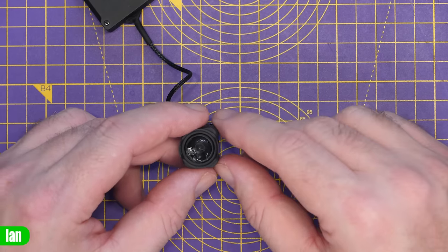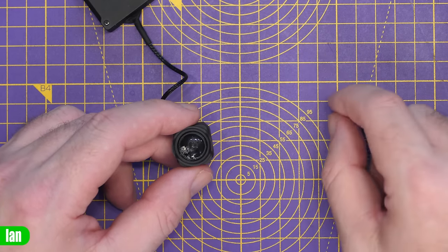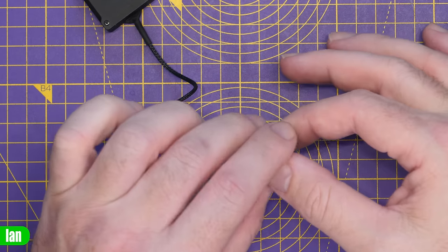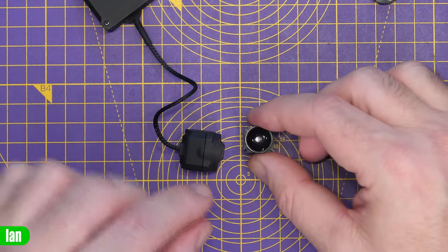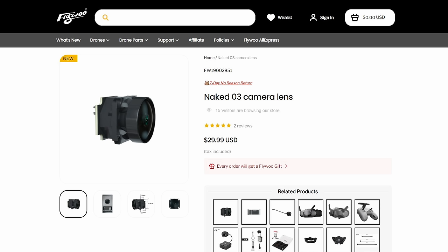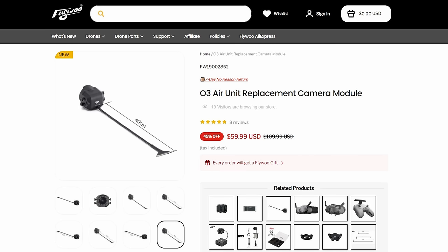However, if $109 is too much, don't worry. There is a cheaper option, and that is this little camera module. Now this is available from the likes of AliExpress, and you can even get it from Flywoo as well. Price-wise, I've seen it for under $30 from both places, and it is a much cheaper option compared to replacing the whole camera. There is also a larger camera module available from Flywoo, but it is this option that most people tend to go for, coming in at under $30.